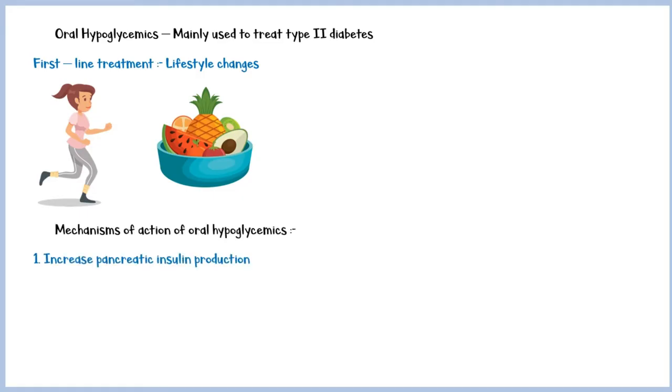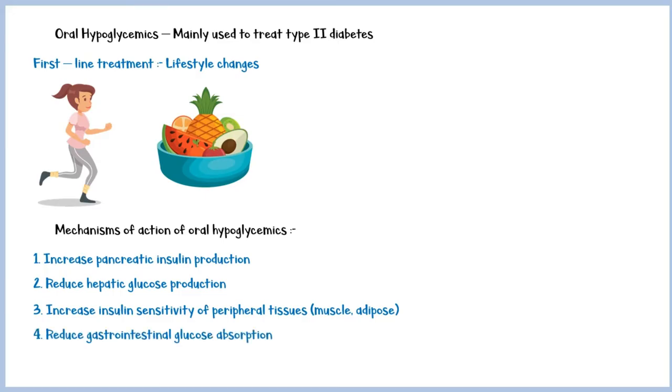These have one or more of the following pharmacological actions: increase pancreatic insulin secretion, reduce hepatic glucose production, increase insulin sensitivity in peripheral tissues, reduce gastrointestinal glucose absorption, or reduce renal tubular glucose reabsorption.